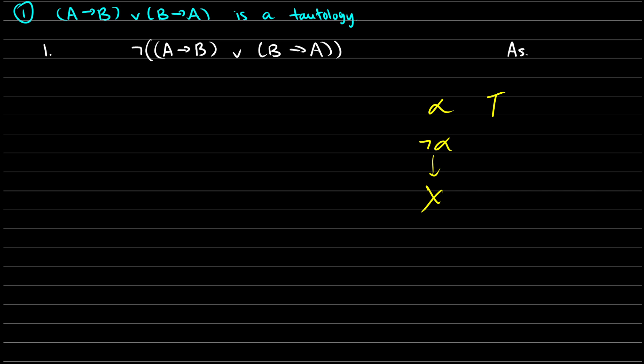Because remember, tautologies are always true, and in order to close a tree, we need something that's false — we need contradictions in there. So what I've done is I have negated this: not (A → B) ∨ (B → A), I have negated this to start.